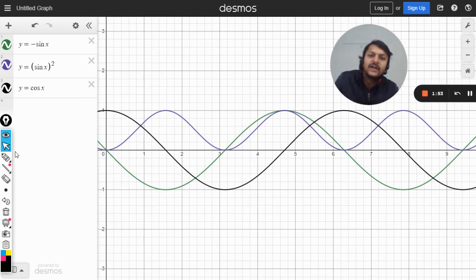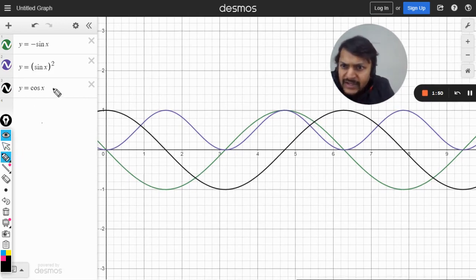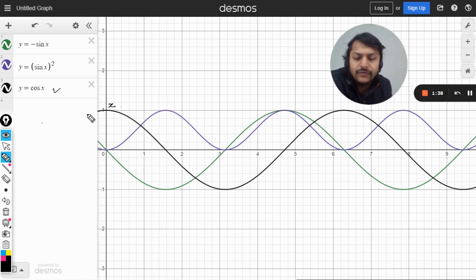You see, y equals cos x is basically the displacement shown in black. We differentiated it and found the velocity vector. The velocity vector is directly proportional to minus sine x. The magnitudes are not right, but the motions are right.